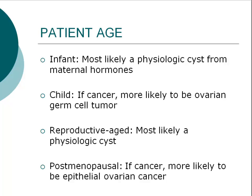As you take the patient's history, consideration of the patient's age can provide assistance with a differential diagnosis. A female infant and even a fetus can develop an adnexal mass; in this age group, adnexal masses are usually benign, however they should be referred for follow-up ultrasounds. Adnexal masses in children can be benign or malignant, with germ cell tumors being the most common malignant type. Reproductive-age women are most likely to have a physiologic cyst, while in a postmenopausal woman the chance of ovarian cancer is higher.